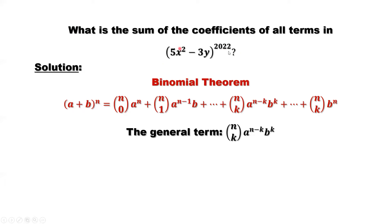Back to our question. In our question, what is a here? 5x squared is the a. What is the b? b is negative 3y. What is n? n is 2022.